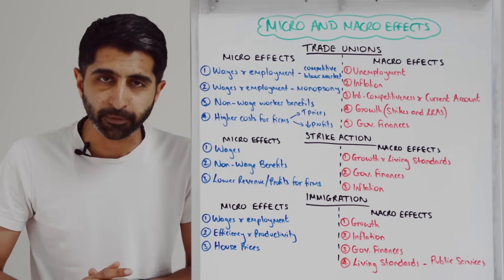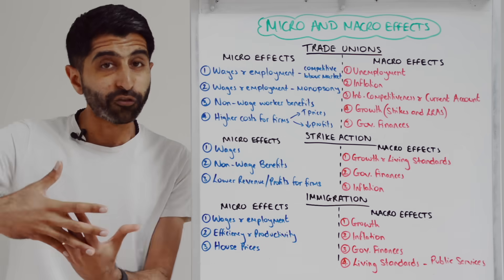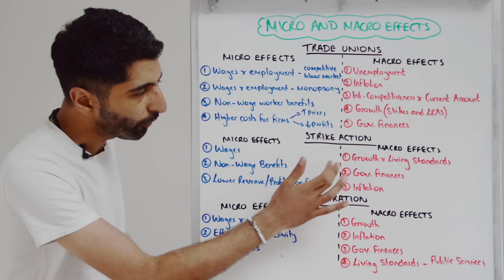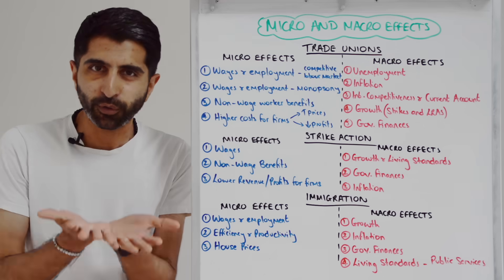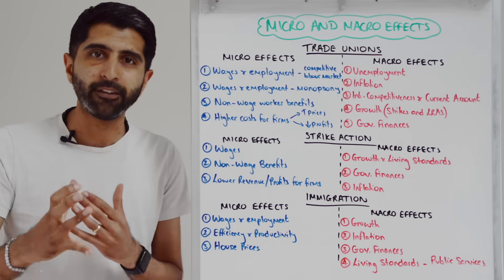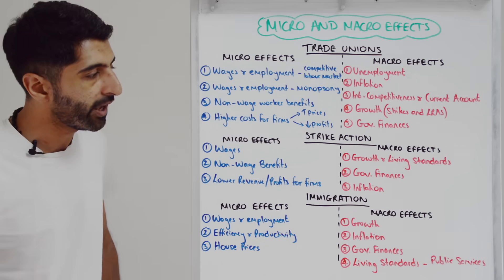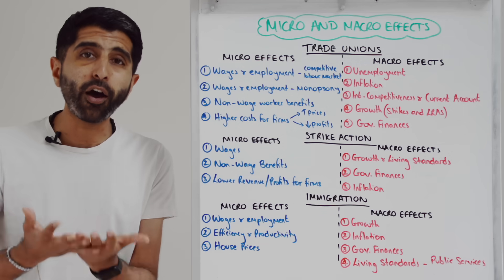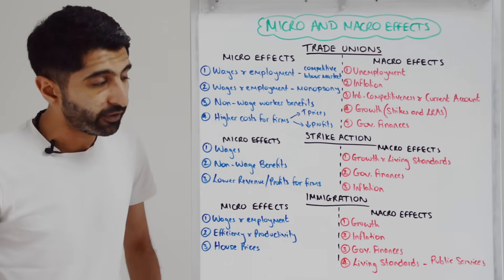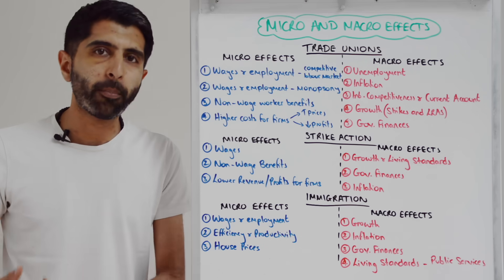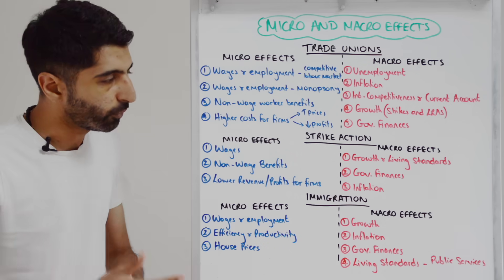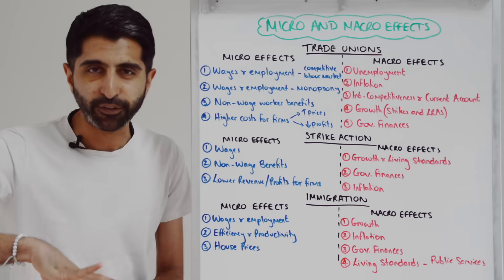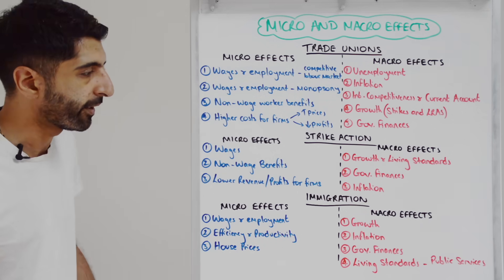You can worry about the impact on government finances from lower growth and that lost output from strike days, but also if trade unions are successful in forcing up wages and the government is the monopsony employer, there's another link to worsening government finances. And if wages are forced up and non-wage benefits are also bargained for, driving up costs for firms that then push up prices, you've got the inflationary impact to talk about again.